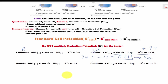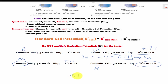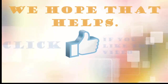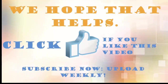Now, what happens when I reverse the conditions and make lead the anode? Lead becomes oxidation, so the sign flips to positive 0.13. Chromium becomes the cathode reduction, which stays the same. Adding the oxidation value of positive 0.13 plus the reduction value of negative 0.74 gives us negative 0.61 V. Since this is negative, this is a non-spontaneous redox reaction.